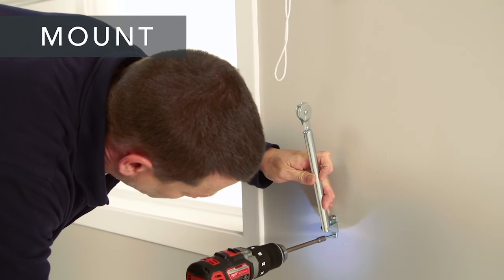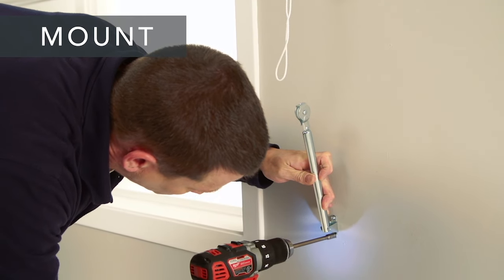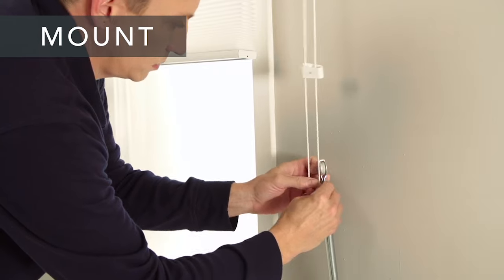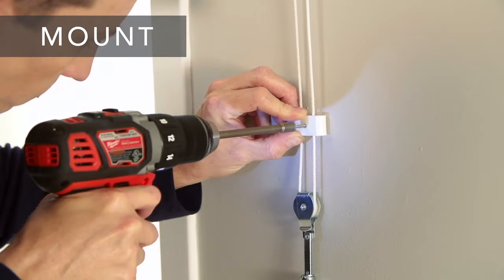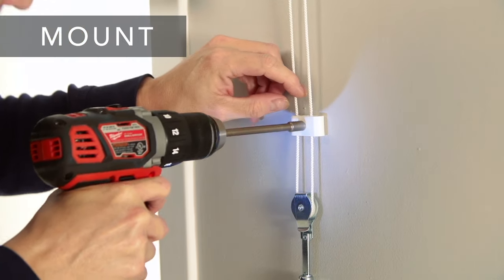The final step in the hardware installation is making sure the cords are taut and attaching the tension pulley and hold down device to the wall. This will create a safer environment for kids and pets if used correctly and consistently.